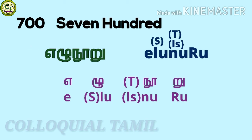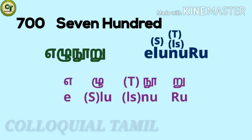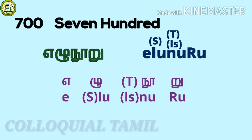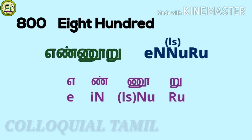For 700: elu noo ru. You just add these two letters to noo ru. This letter belongs to the group of special ra letters, so I put capital S to represent it. While pronouncing it, you fold the tip of your tongue towards the back roof of your mouth. When joined with noo ru, it becomes elu noo ru.